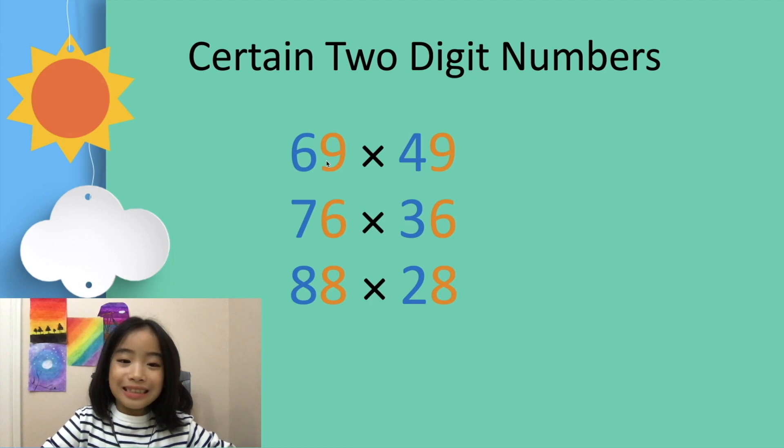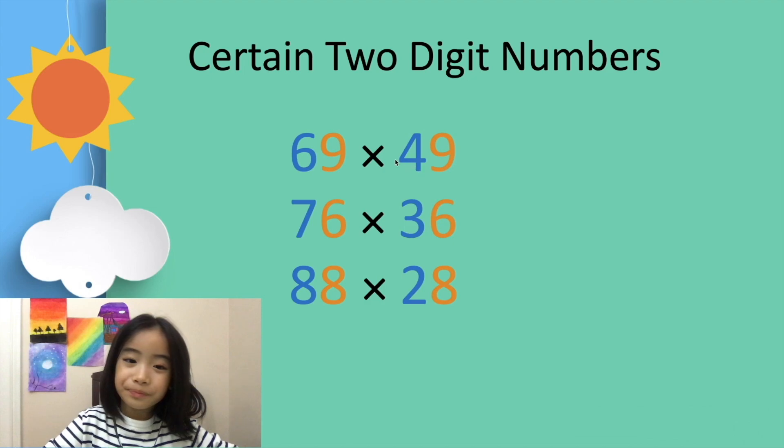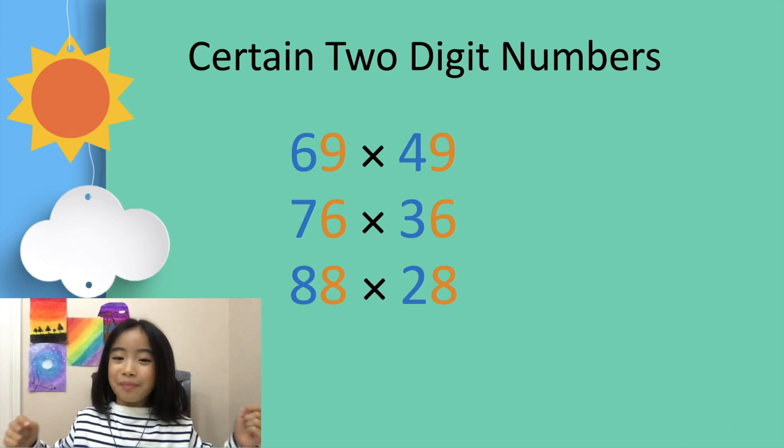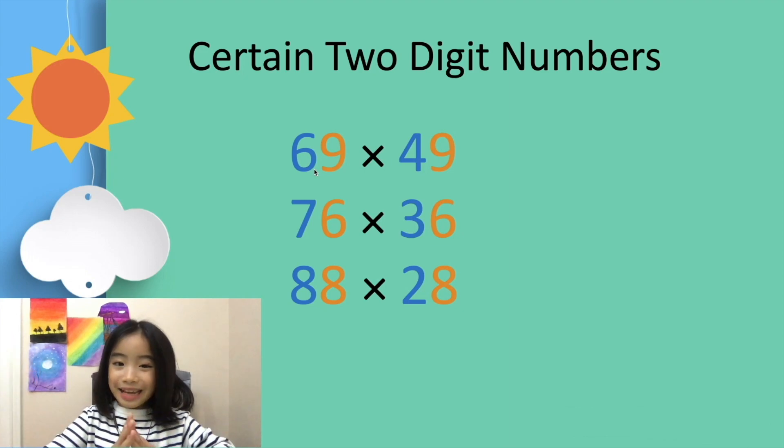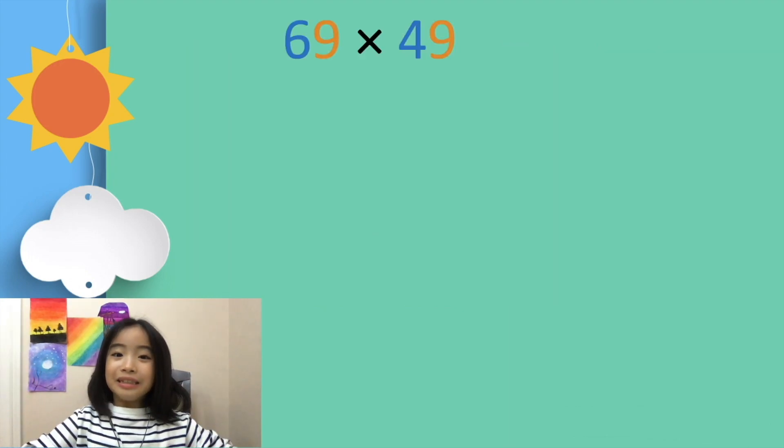Let's use 69 x 49 as our example. Do you spot the pattern? Well, they both end in 9, and 6 plus 4 equals 10. The pattern is that the ones digits are the same and the tens digits added together equal 10. Let's learn the trick.